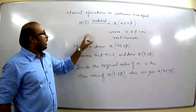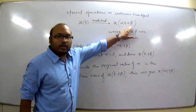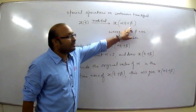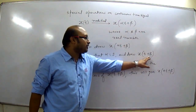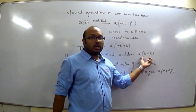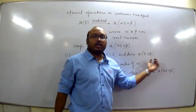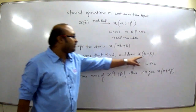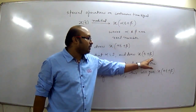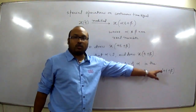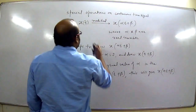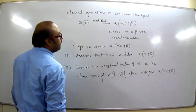So to modify X(T) in the form of X(αT + β): first assume that α is 1, then the signal becomes X(T + β). Draw X(T + β) — if β is positive, X(T) will be advanced; if β is negative, X(T) will be delayed. Then divide the original value of α in the time axis of X(T + β) to get X(αT + β). Now let's see some examples.